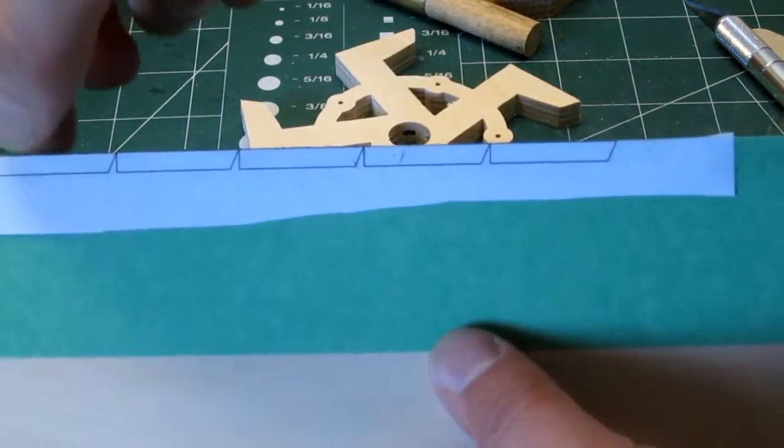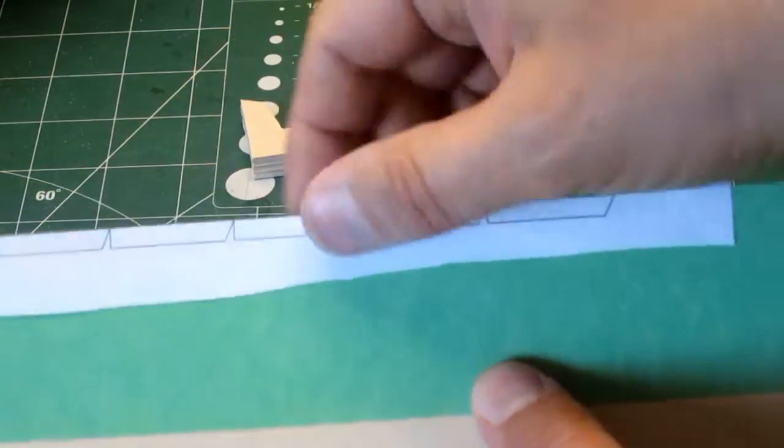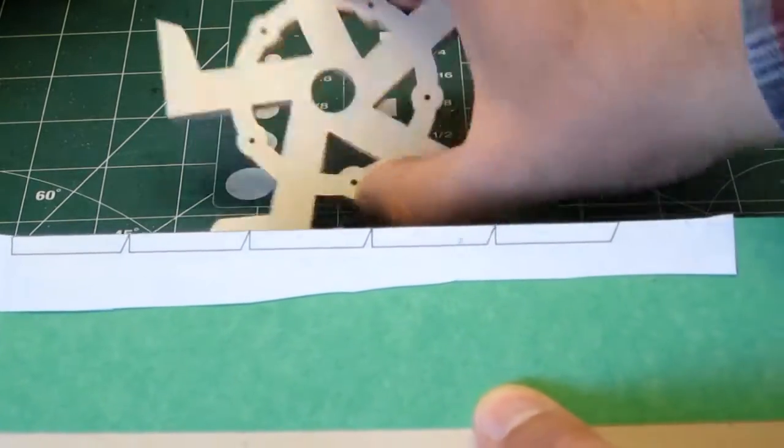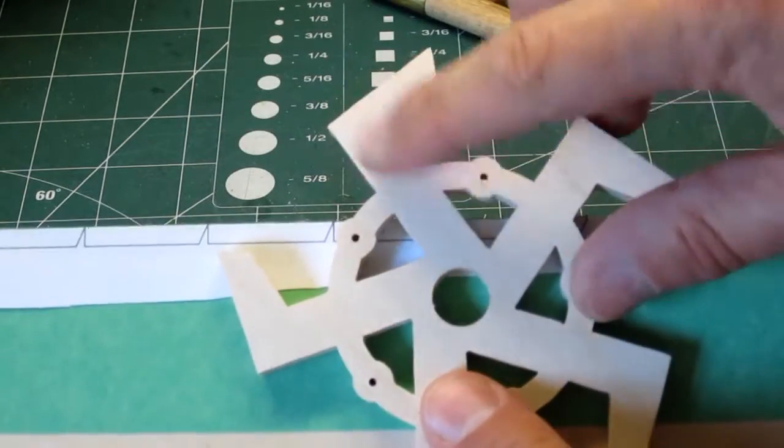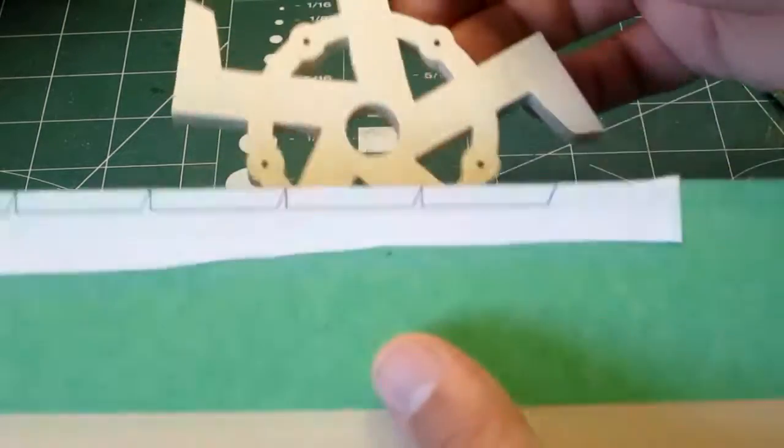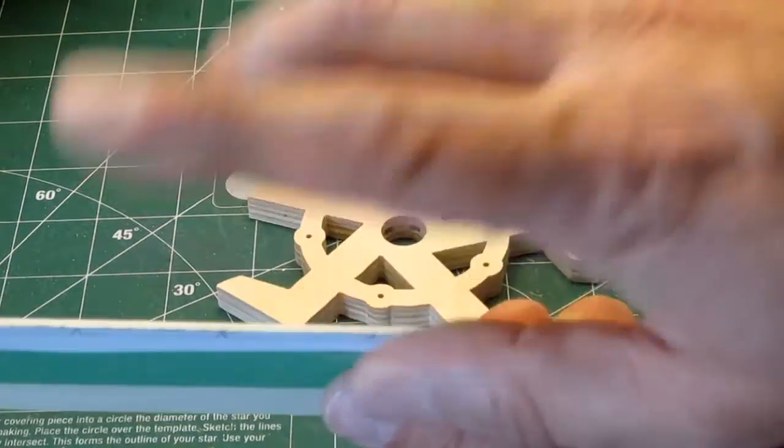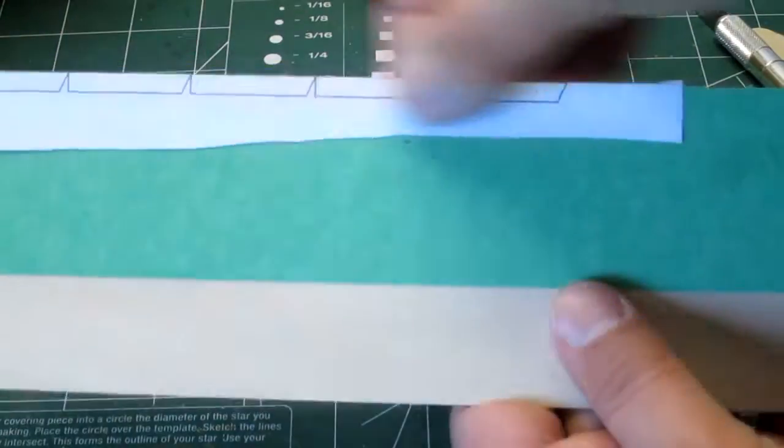I'm making some risers to keep the bellow from rubbing on the structure as it operates. It's made from 1/16 inch wood. I'm just going to cut it out with a hobby knife.